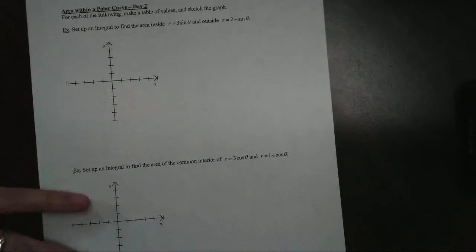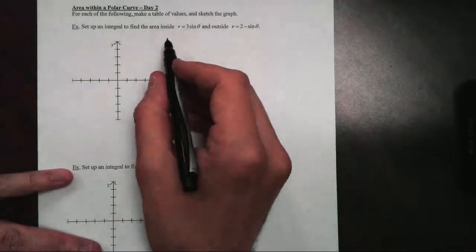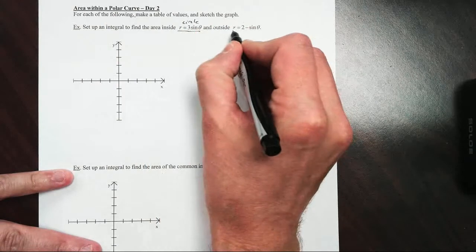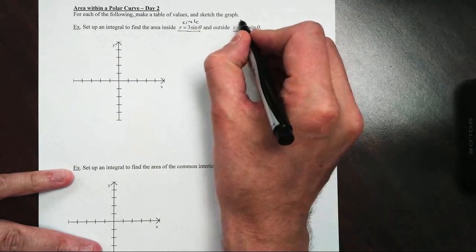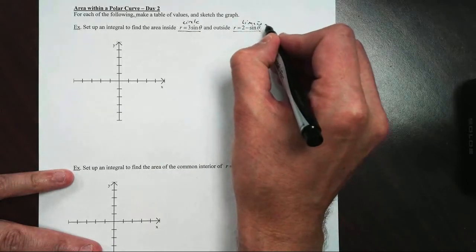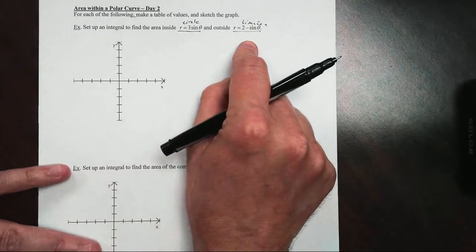If we take a look at the first example, we want to set up an integral to find the area inside this one, which is a circle. And right over here, this limacon. Now be careful, this is our dimpled limacon, so it's not going to touch the pole.